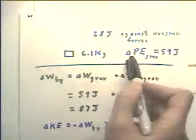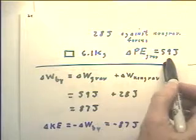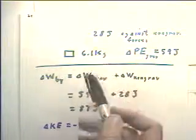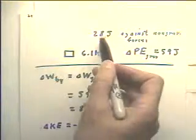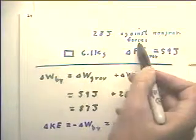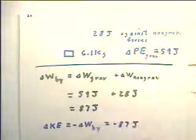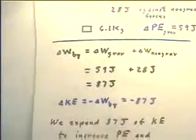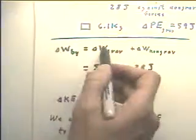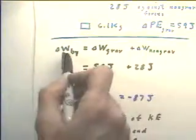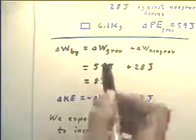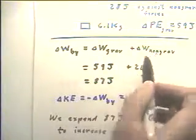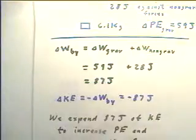We can think about it. The potential energy increases, which is going to tend to decrease the kinetic energy. If the system is also doing positive work against non-gravitational forces, that's going to tend to further decrease the kinetic energy. If we work it through the equation, the work done by the system can be split into the work done against gravity and the work done against non-gravitational forces.